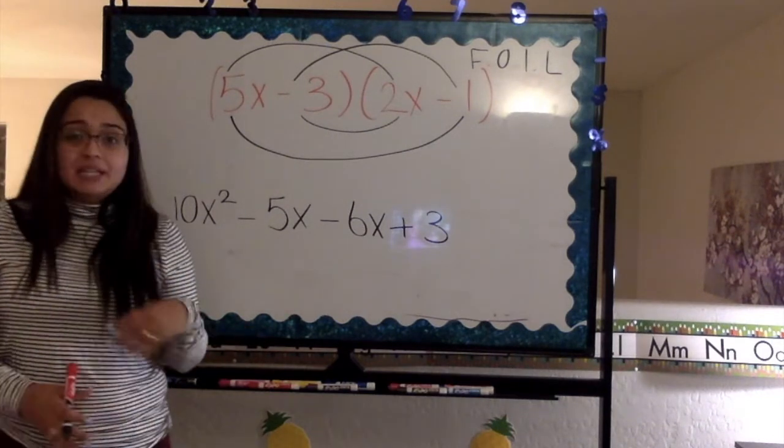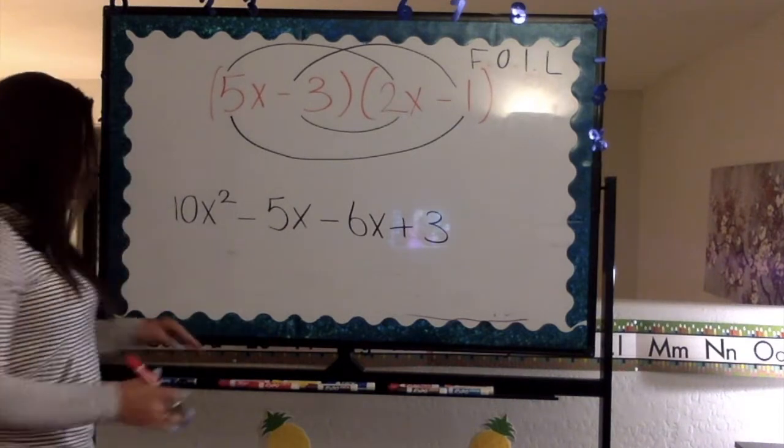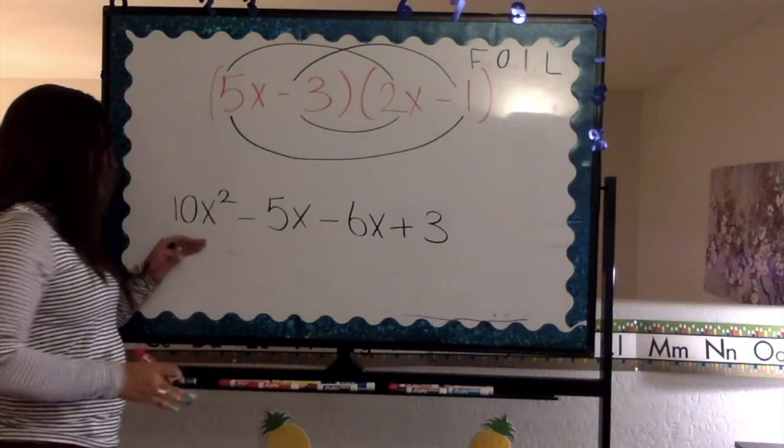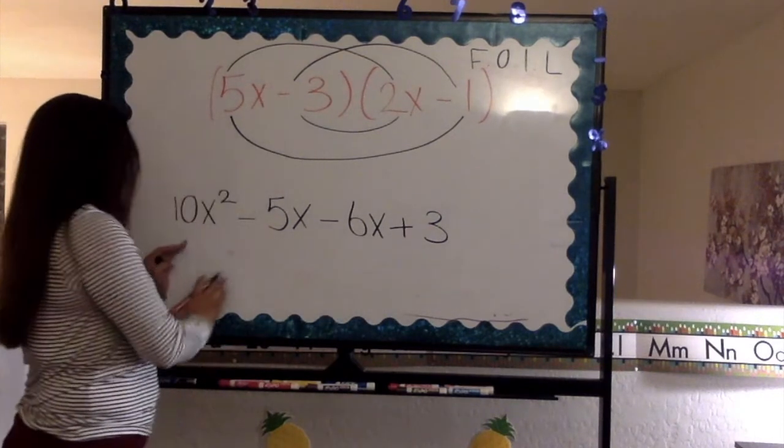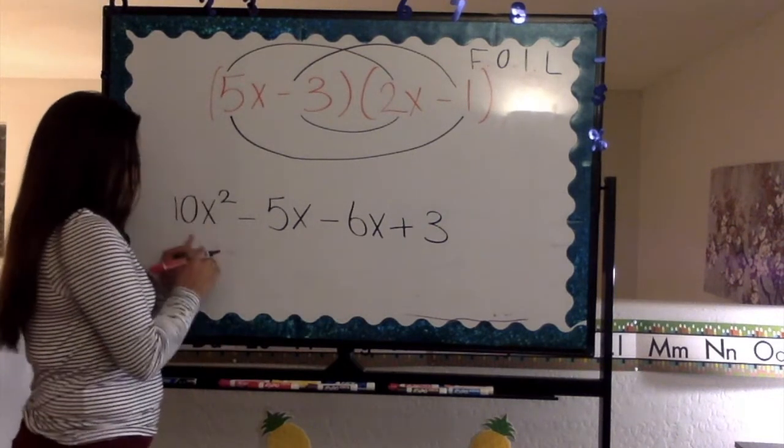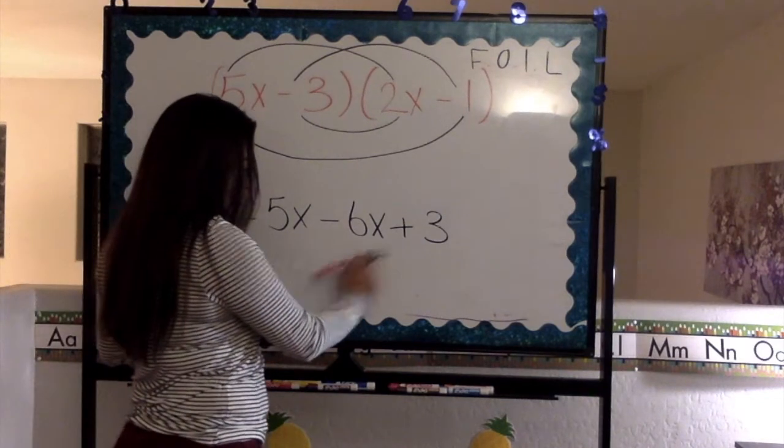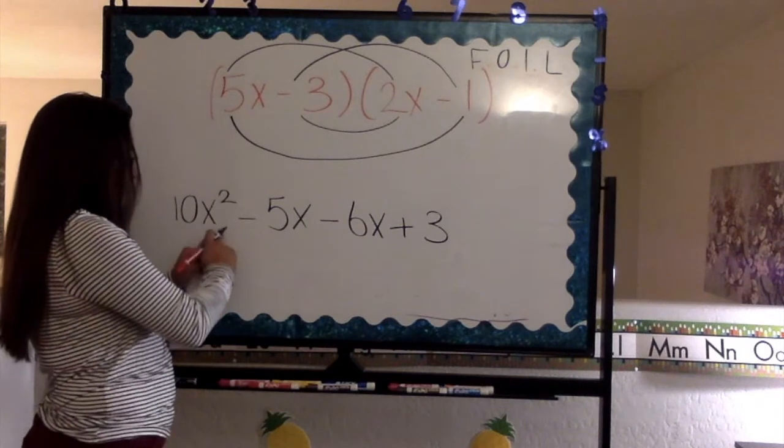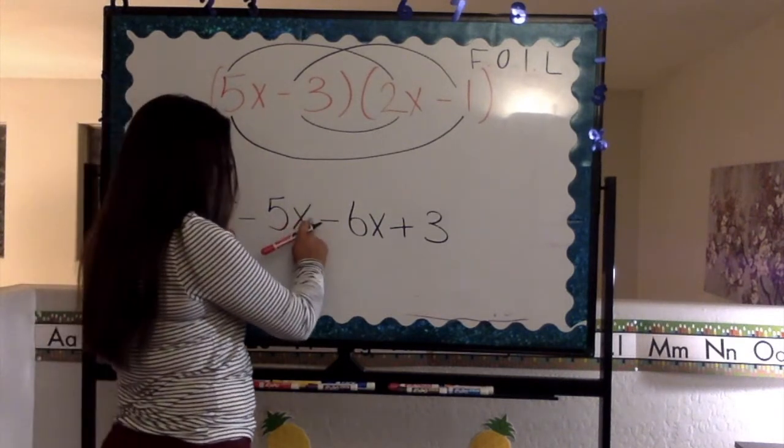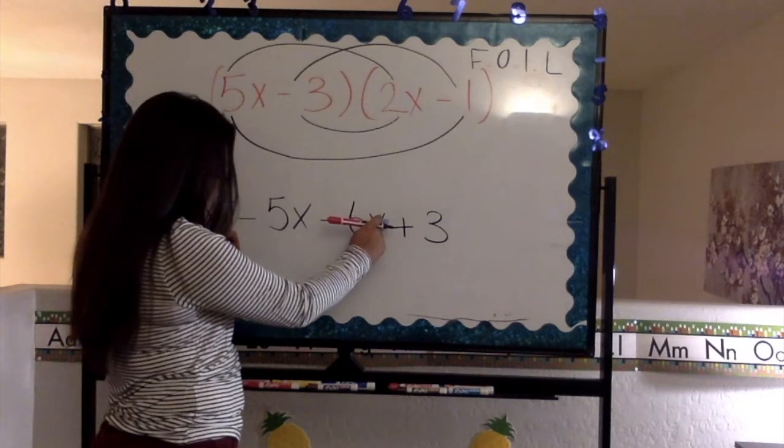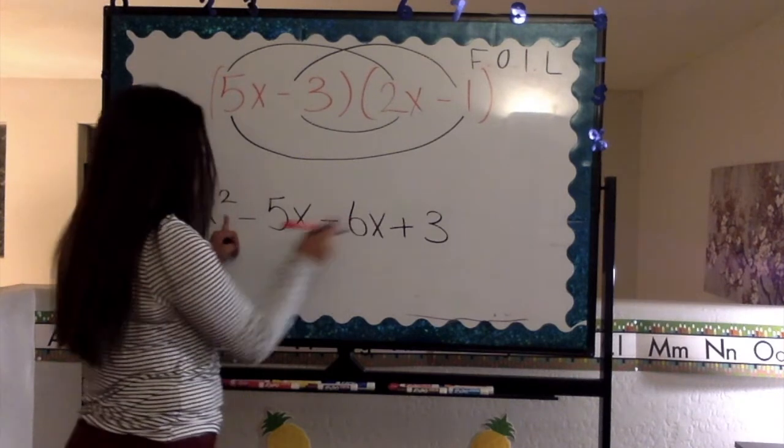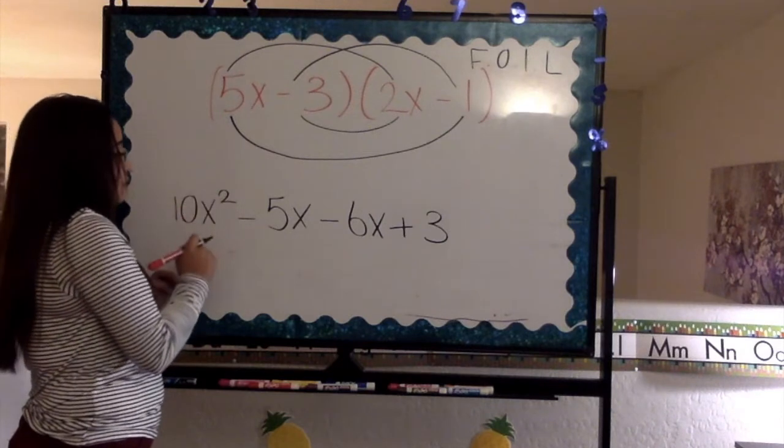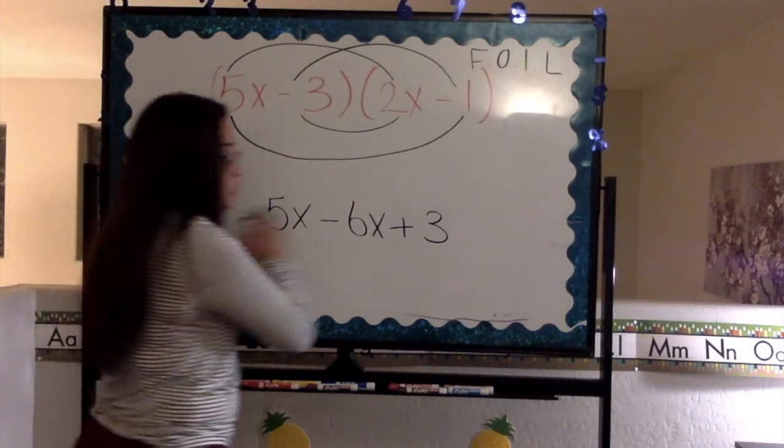We're going to be combining like terms. So let's start with 10x squared. Do we have any other numbers that have an x squared? These two have an x, this one doesn't. So there's no common factor there. But it's x squared. So is this x squared? No. Is this x squared? No. So therefore, it does not have any common factors.